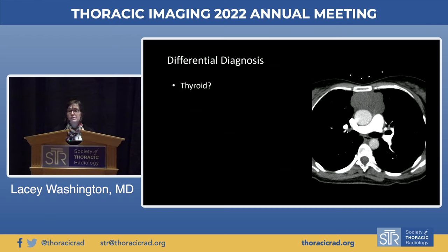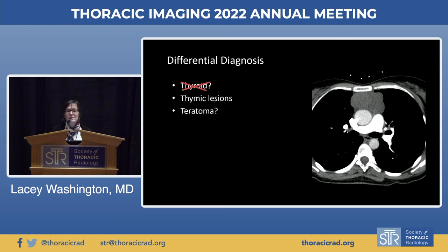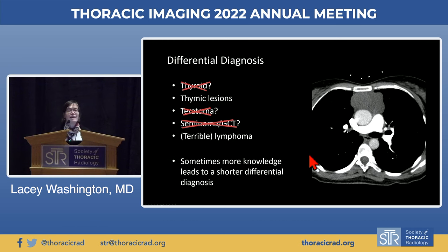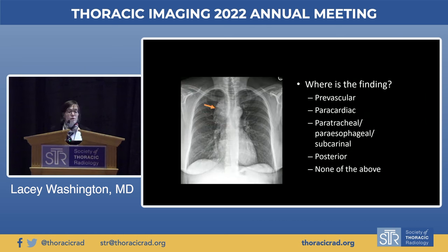On CT, we can work through the differential: thyroid? Wrong location. Thymic lesion? Possible, depending on the patient's age. Teratoma? No — it's a very bland, homogeneous anterior mediastinal mass with no fat, no fluid, no calcification. Seminoma or germ cell tumor? There's breast tissue visible on this patient — this is a young woman, and those are tumors of men. Lymphoma? Yes, this could be. Depending on age, this will be either a thymic lesion or a lymphoma.